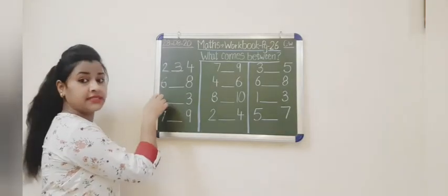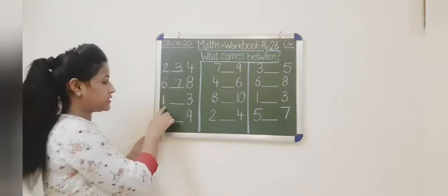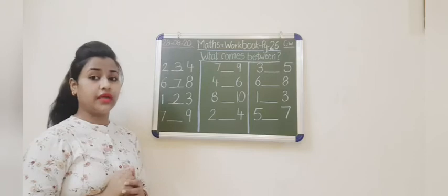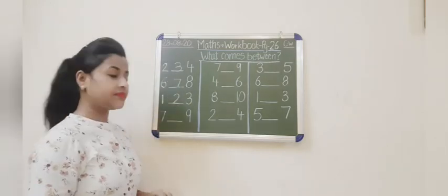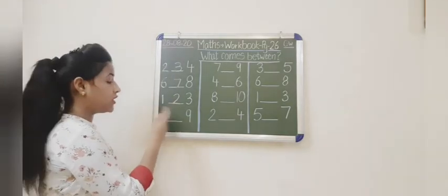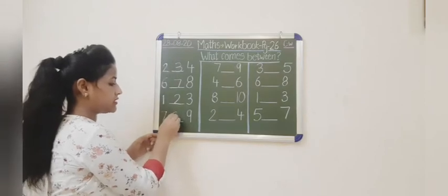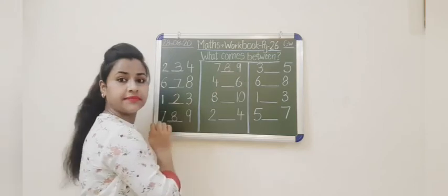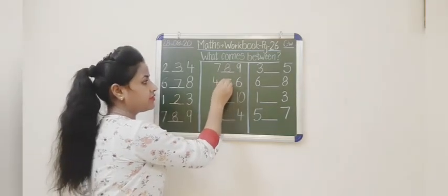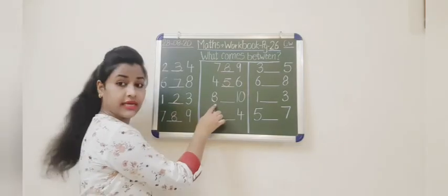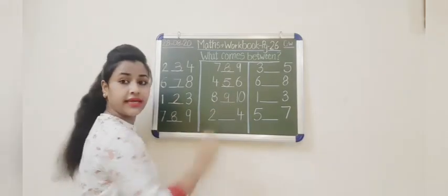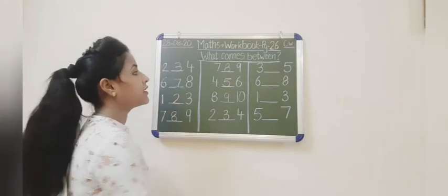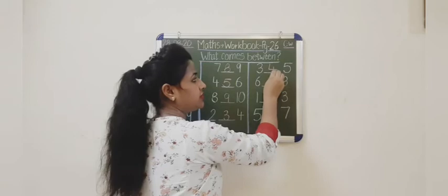Now next: 6, 7, 8. Now next: 1, 2, 3. I request all the parents, please be careful about the formation of numbers — your student should touch the bottom line. Now which number is this? 7. So what comes after 7? 7, 8 and 9. Here again: 7, 8, 9. Then: 4, 5, 6. Then: 8, 9. Then: 9, 10. Then: 2, 3, 4. After 3: 4, then 5.